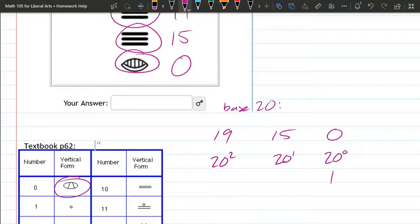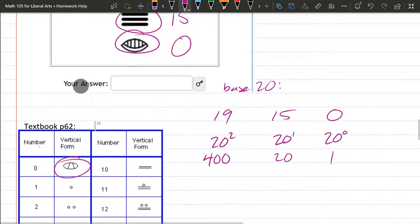20 to the zero is 1, 20 to the first is 20, 20 squared - 20 times 20 is 400.